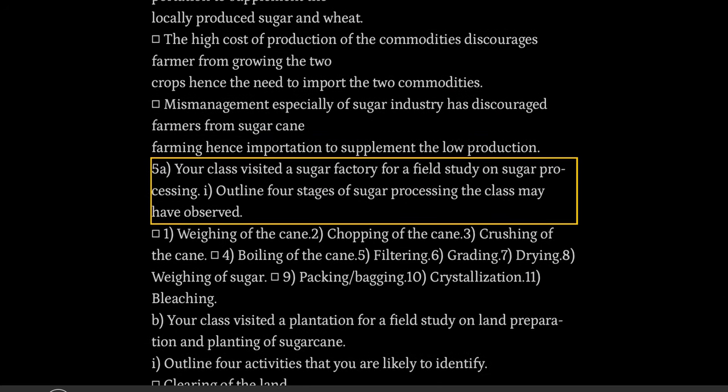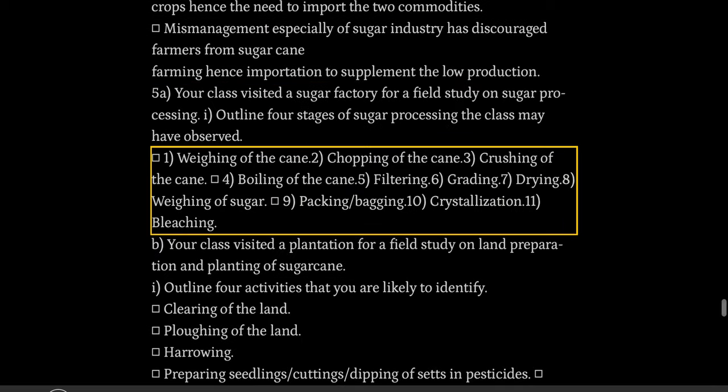Your class visited a sugar factory for a field study on sugar processing. Outline four stages of sugar processing the class may have observed: 1. weighing of the cane, 2. chopping of the cane, 3. crushing of the cane, 4. boiling of the cane, 5. filtering, 6. grading, 7. drying, 8. weighing of sugar, 9. packing/bagging, 10. crystallization, 11. bleaching.